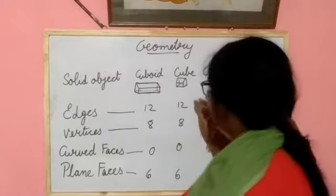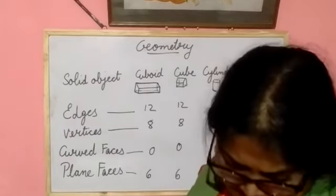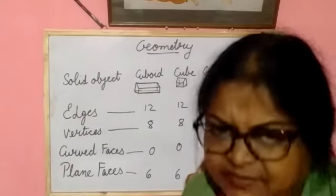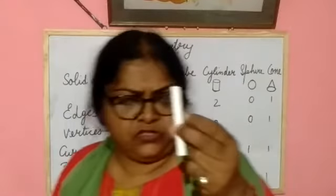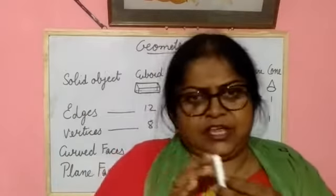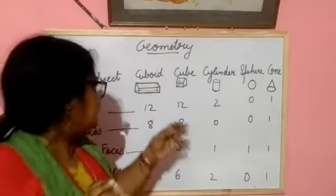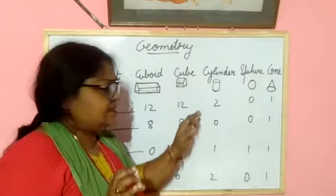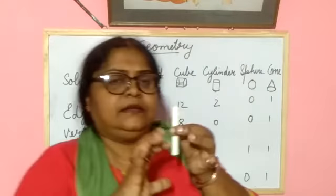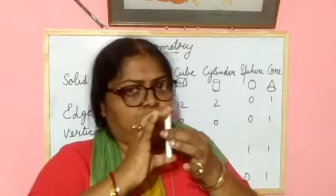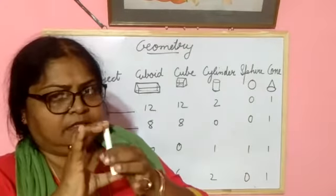Next one is a cylinder. You can see this one as a cylinder — chalk is the shape of a cylinder. In a cylinder, how many edges are there? 2 edges: 1 and 2.